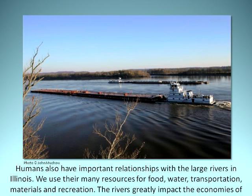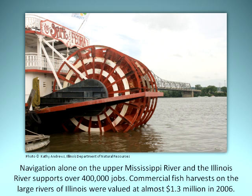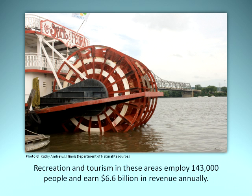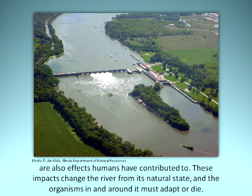The rivers greatly impact the economies of local communities. While ferry boats carry people and cars across the rivers, huge barges filled with commodities travel all along a river's length. Navigation alone on the upper Mississippi and Illinois River supports over 400,000 jobs. Commercial fish harvests on the large rivers of Illinois were valued at almost $1.3 million in 2006. Recreation and tourism in these areas employ 143,000 people and earn $6.6 billion in revenue annually. Humans impact the rivers by building levees, locks, dams, and many other structures. Pollution, increased erosion and sedimentation rates, and the introduction of non-native species are also effects humans have contributed to.